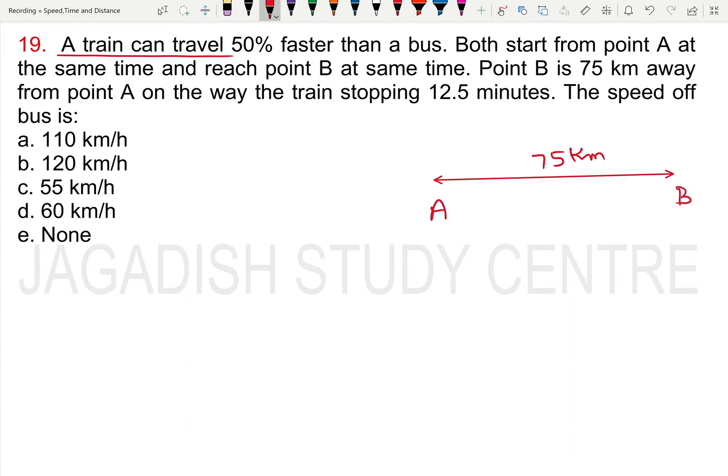A train can travel 50% faster than a bus. Both start from point A at the same time and reach point B at the same time. Point B is 75 km away from point A. On the way, the train stops for 12.5 minutes. Find the speed of the bus.